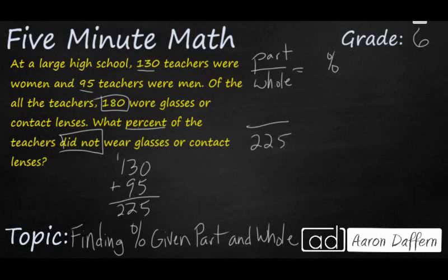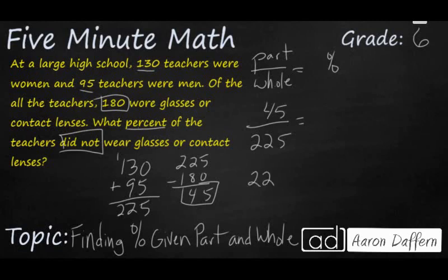Now it says 180 teachers wore glasses or contact lenses, and we want the percent that did not. So we need to take our whole, 225, and subtract the 180 that did wear glasses or contact lenses. That leaves us with a part of 45 teachers that did not wear either contact lenses or glasses. Now that we've done all that work, we finally have the two pieces of information we need: the part and the whole.